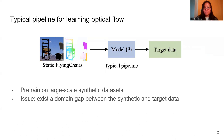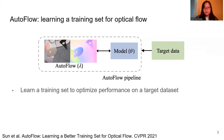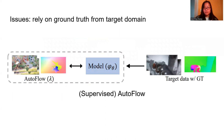To narrow the domain gap, Autoflow learns to render a training dataset to optimize performance on a target dataset. Although Autoflow obtains promising results, it cannot be applied to real-world videos that do not have optical flow annotations.